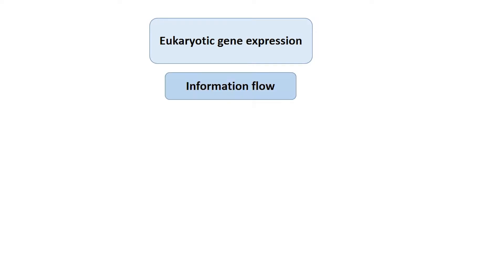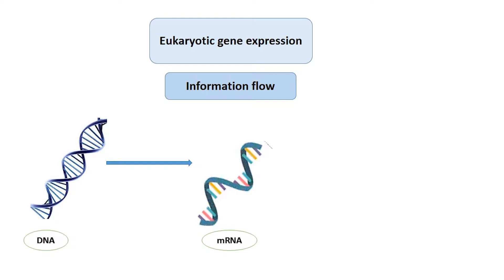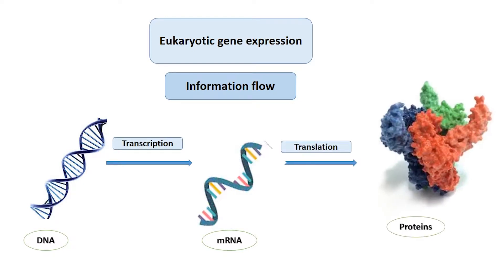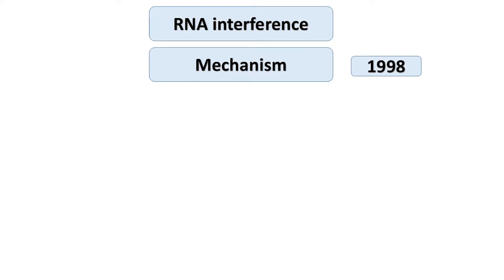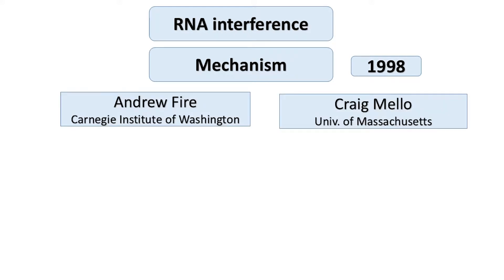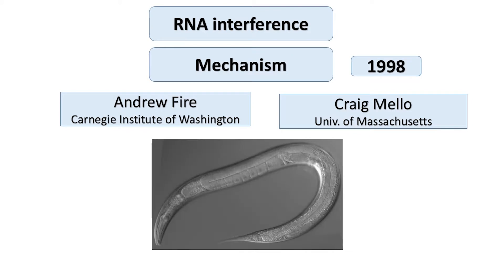Hello everyone. In this video, we discuss a cellular mechanism involved in silencing gene expression: RNA interference, or RNAi. In eukaryotes, gene expression typically involves flow of information from DNA to RNA by transcription, and from RNA to proteins by translation. Proteins are the products of gene expression. The mechanism of RNA interference was deciphered in 1998 by Andrew Fire and Craig Mello in the nematode Caenorhabditis elegans.